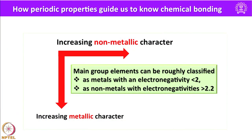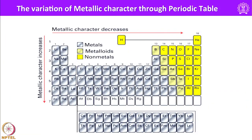In the periodic table there are metals and non-metals. Along a period the non-metallic character increases, and in a group the metallic property increases. The main group elements can be roughly classified as metals with an electronegativity less than 2 and as non-metals with electronegativity greater than 2.2. Elements with electronegativity above 2.2 are essentially non-metals and are all on the right side of the periodic table. The alkali metals, alkaline earth metals, and some heavier elements in each group have metallic properties. This chart shows the variation in metallic character: gray elements have metallic properties, grayish-yellow are metalloids, and yellow are non-metals.